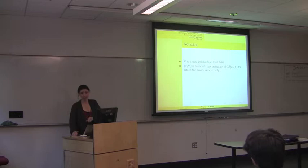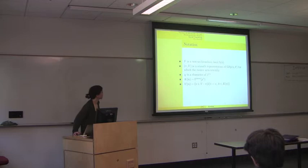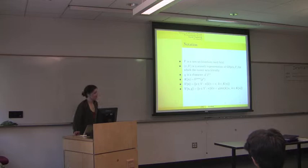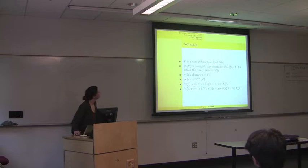The fact that we have trivial central character means the only twists we consider are quadratic twists — if I twist by a non-quadratic character, I won't have trivial central character anymore. So χ is a quadratic character of F×, and K_n is the paramodular group of p^n. V_n is the space of vectors invariant under K_n, and V_n(χ) is the space of vectors that transform according to χ. You can also think of the twisted representation as tensoring every function by χ.